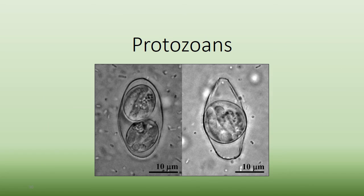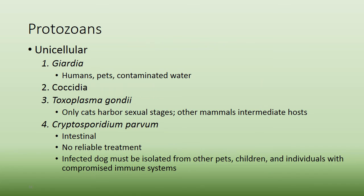Moving on to protozoans — these are single-celled organisms. They're not traditionally considered parasites because they are unicellular, but they have parasitic tendencies and are classified with parasites. The ones we'll cover are Giardia, Coccidia, Toxoplasma, and Cryptosporidium.